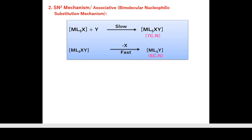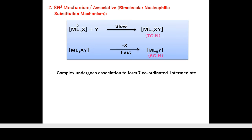SN2 mechanism is also called associative mechanism or bimolecular nucleophilic substitution. In the first (slowest) step, ML₅X is directly attacked by Y — association of Y gives ML₅XY as a seven-coordinated intermediate. In the next (fast) step, X ligand is removed, giving ML₅Y as a product with coordination number 6.